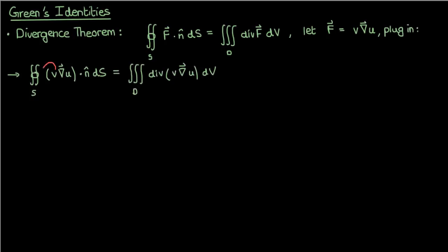On the left-hand side, we can take the scalar function v outside the dot product, and we'll just have the dot product of the gradient of u and the unit normal vector n. But if you remember from multivariable calculus, this gradient of u times the unit normal vector n, their dot product is just the directional derivative of u in the normal direction, also known as the normal derivative du dn.